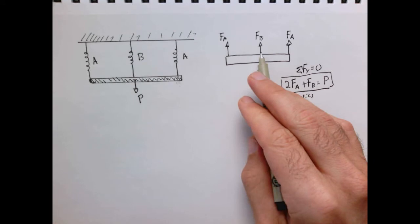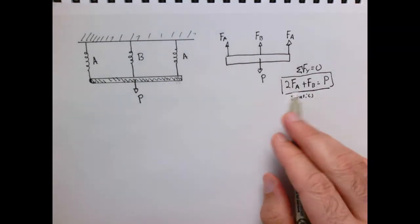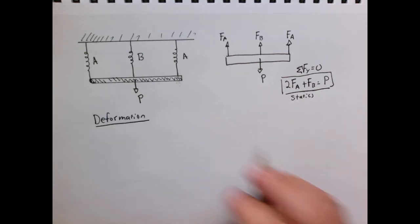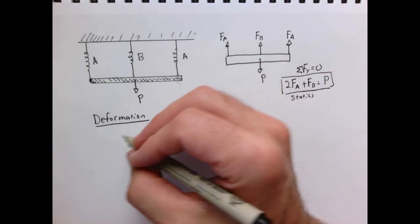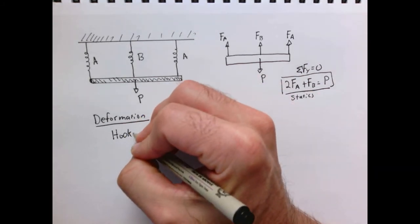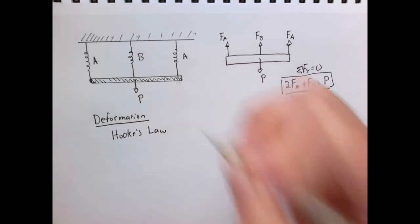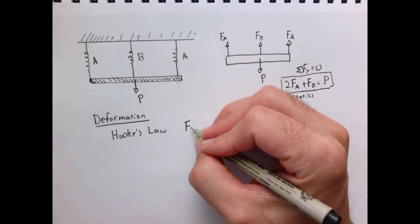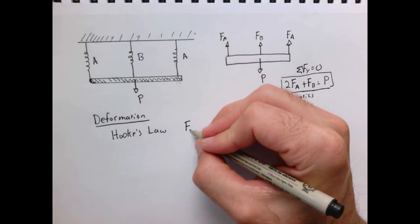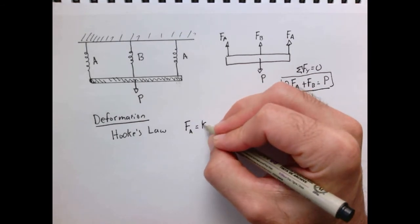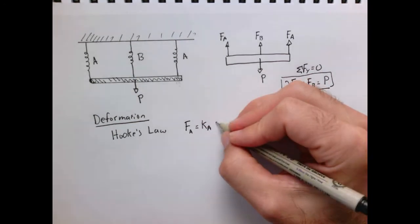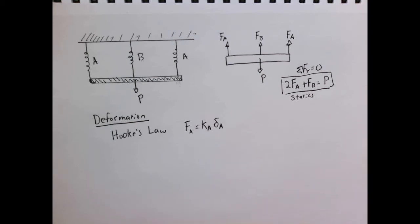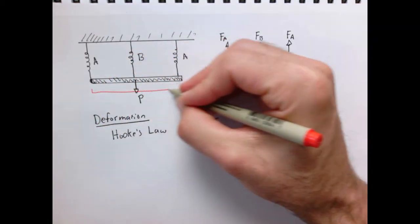Statics tells us there's a relationship between F_A and F_B, but doesn't tell us what each value is independently, so we have to consider deformation. For a simple spring, we use Hooke's Law: the force is proportional to displacement. So F_A = k_A · δ_A, where δ is the change in length of the spring — the amount it stretches when load P is applied.